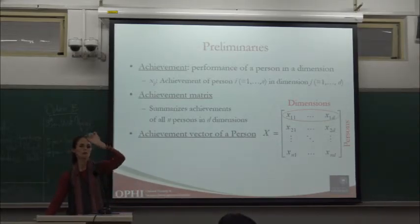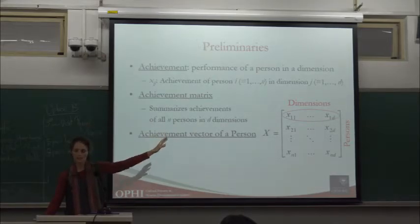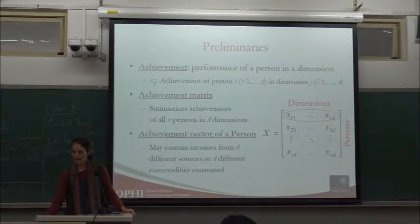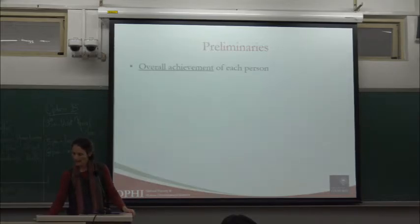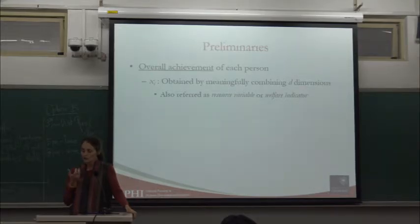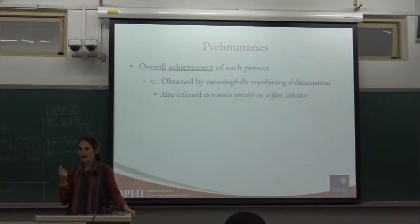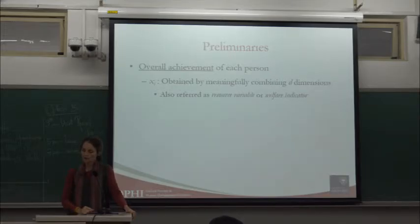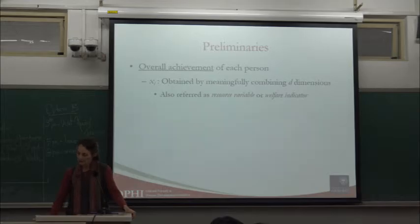Each row will be the achievement vector of the person — their consumption or income components. The overall achievement of a person is x_i, their aggregate — the resource variable, the welfare indicator, the income or consumption aggregate — and that's what we set a poverty line across. That total or overall achievement is total consumption or total income.